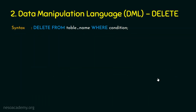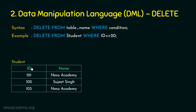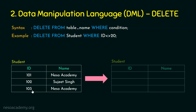Let's see one more example for delete: DELETE FROM student WHERE id != 20. This is one of the ways to represent not equal to in SQL. Suppose we have a table with ids 101, 102 and 103. Since 101, 102 and 103 are all not equal to 20, this command erases all the rows in the table because the condition matches every record.